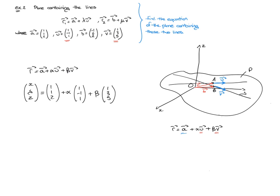And there we go — that is a vector equation of our plane. We could, of course, have chosen the point B instead of the point A, in which case we would have: X, Y, Z equals negative one, zero, two, plus alpha times one, negative one, one, plus beta times one, three, five. And this would also be a perfectly valid vector equation for this plane.